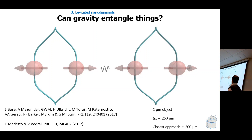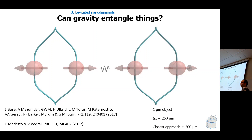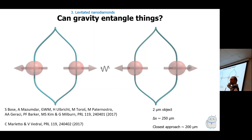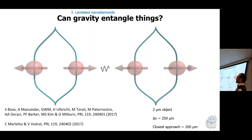You have to do the experiment in a regime where gravity is stronger than other coupling mechanisms. The closest approach needs to be about 200 microns — we'd like to make it smaller so the gravitational interaction is stronger, but we can't because of the Casimir force. At about 200 microns or more, gravity takes over from other interactions. This experiment is enormously difficult — maybe on the scale of LIGO — but it doesn't require civil engineering and looks like it could be done on a tabletop, just with many challenges.